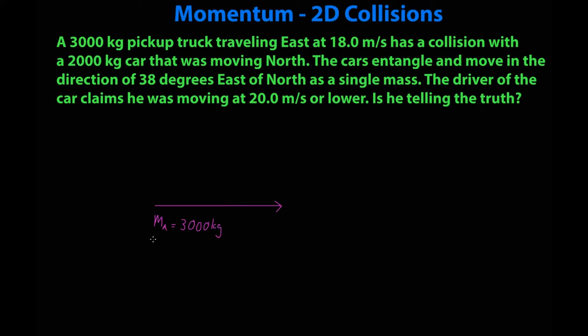Mass a 3,000 kilograms, velocity a initial 18 meters a second. Now and this is extremely important, this is not a velocity vector, this is a momentum vector. It is basically momentum initial x. But since mass a is the only object that actually has an x velocity it is also the only object that has the x momentum initially. So that makes momentum a initial 54,000 kgm/s.